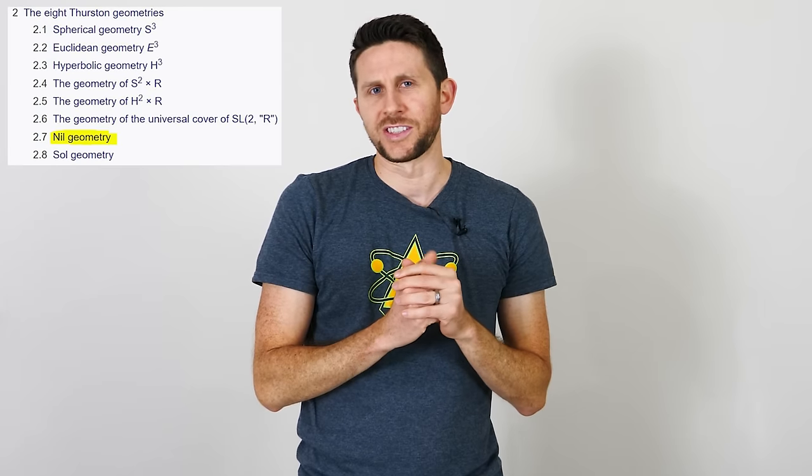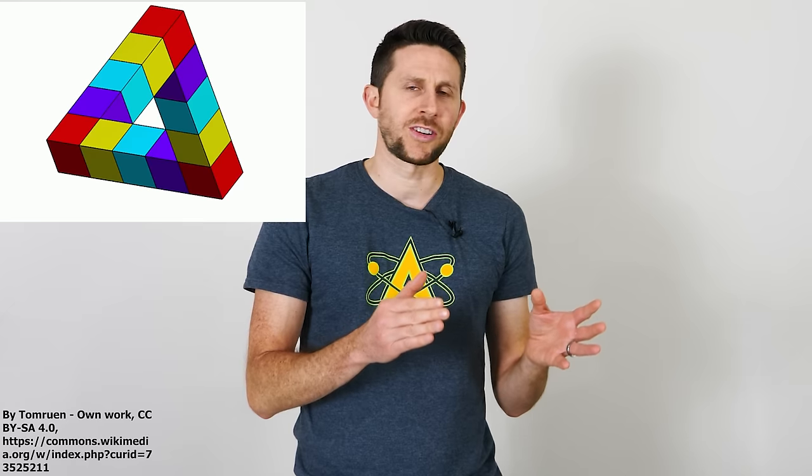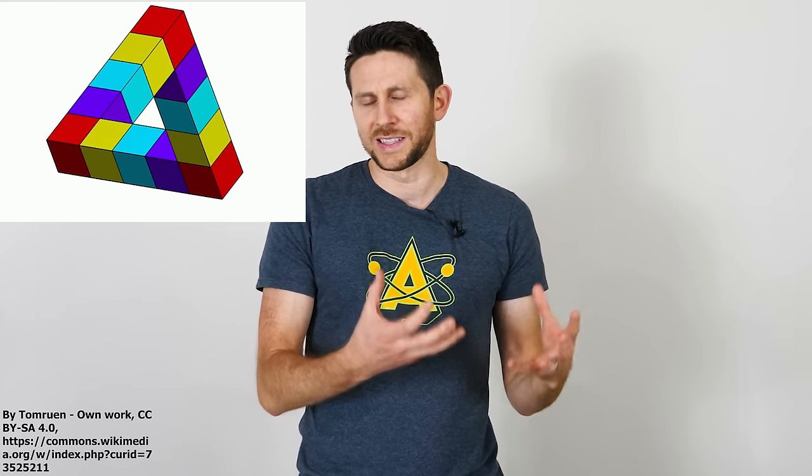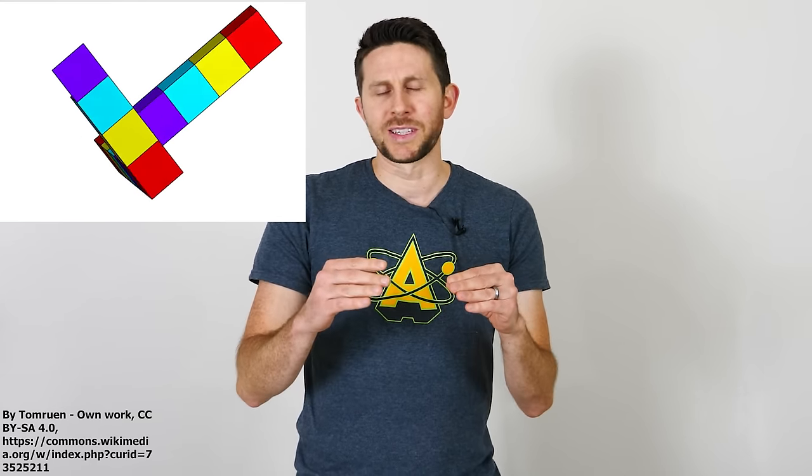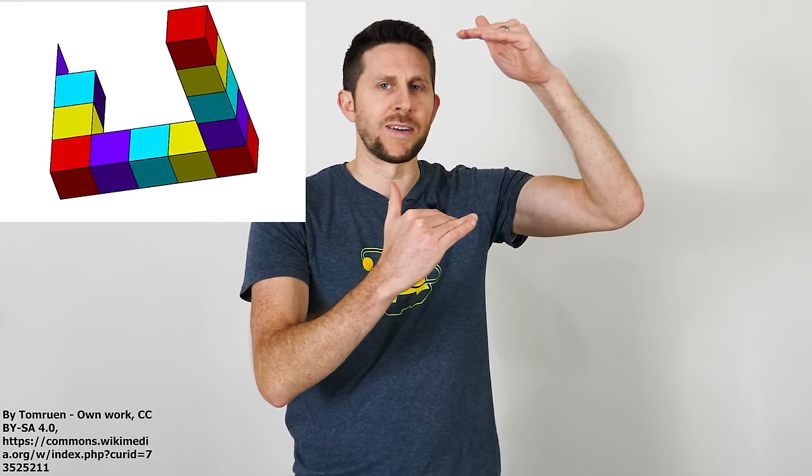But in three-dimensional space, there's actually eight different geometries. And one of those geometries is called nil geometry. And in nil geometry, an Escherian staircase is actually possible. So for example, let's say you wanted to make a Penrose triangle in Euclidean space that we live in. You wouldn't be able to do it. You're always going to end up above where you started from. So in nil space, as you walk around in a circle, you're actually above where you started from.